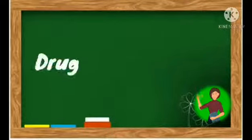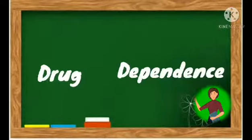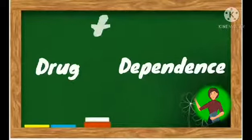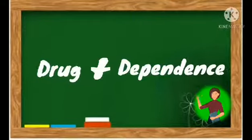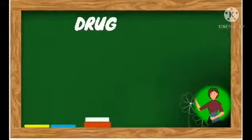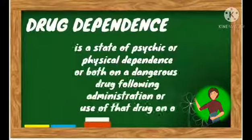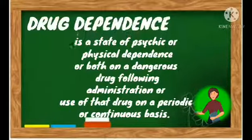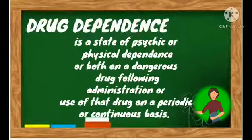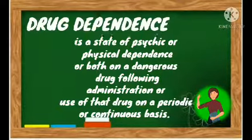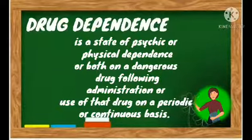So now we already know what drug and dependence are. Let us continue to know what it means if these two are combined together. Drug dependence is a state of psychic or physical dependence, or both, on a dangerous drug following administration or use of the drug on a periodic basis.